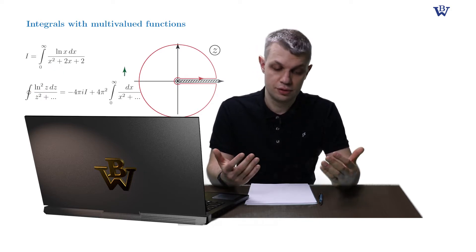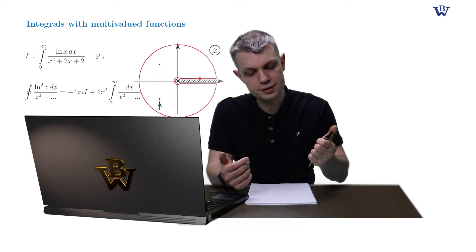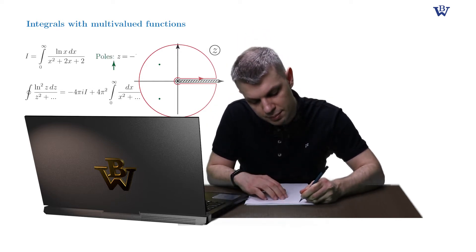So our integrand contains two simple poles inside the contour and both of them are going to contribute to our closed contour integral. Those are the poles at points z equals minus 1 plus or minus i.